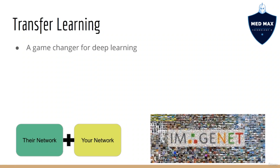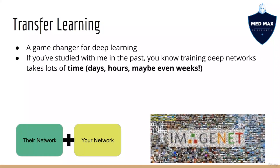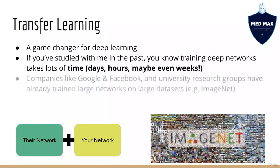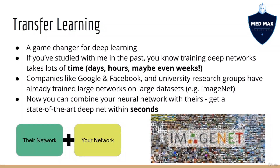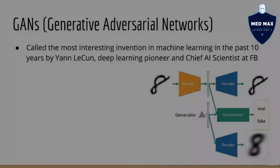The next application was a game changer for deep learning: transfer learning. Training a deep neural network takes a lot of time — you might end up waiting hours, days, or even weeks. Luckily, machine learning engineers have found new ways to build on top of the work of others. Companies like Google, Facebook, or university research groups train large neural networks on huge datasets like ImageNet, which contains over a million images. Using transfer learning, we can take part of their network and combine it with our own — a fast method of building state-of-the-art models.